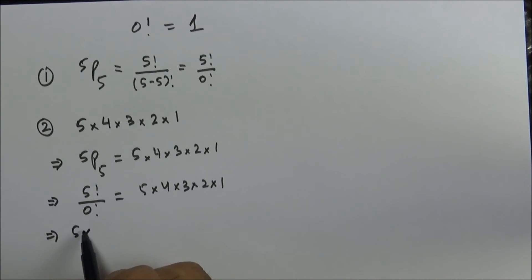We get 5 into 4 into 3 into 2 into 1 divided by 0 factorial, and the right hand side is also the same. So now we are left with 1 by 0 factorial, which is equal to 1, and 0 factorial is equal to 1.